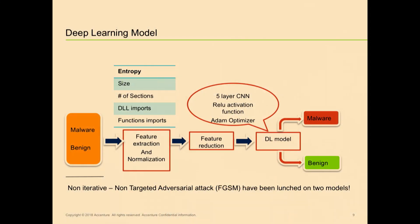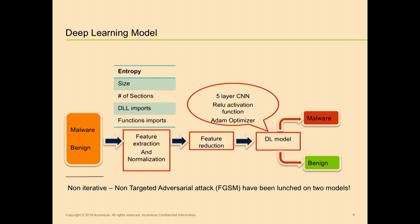By reducing the number of features, we tie their hands in manipulating those features. The features we have chosen are just entropy, size, number of sections, DLL imports, and function imports. We have a feature reduction phase and eventually we apply a five-layer CNN deep learning model to determine if it's malware or benign.